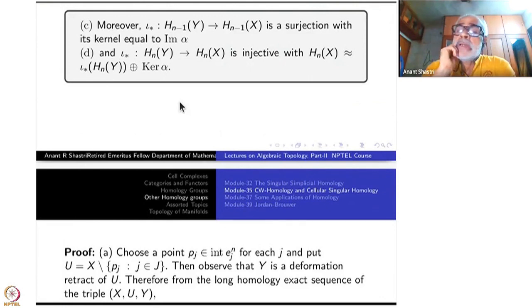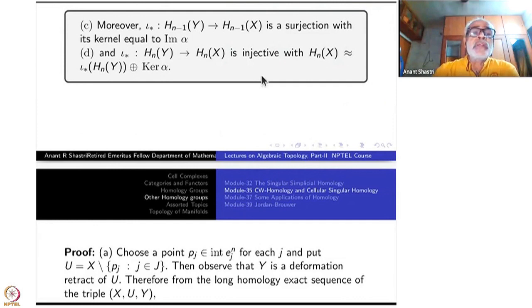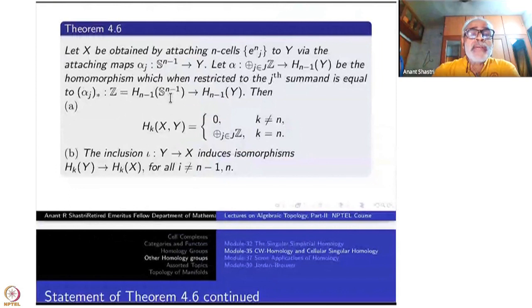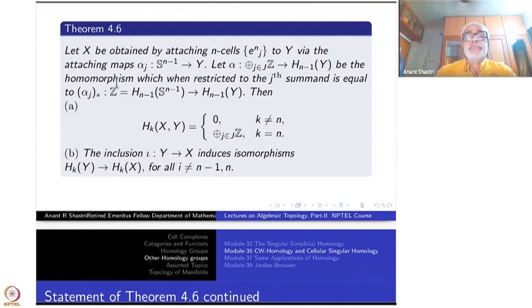And how you have attached the cells — the attaching maps have a role to play here. In fact, exactly at one single place, not everywhere: namely wherever the homology of S^{N-1} was not trivial, i.e., H_{N-1}(S^{N-1}). Look at the induced maps — those alpha_{J*}'s have some say in the homology of X finally.